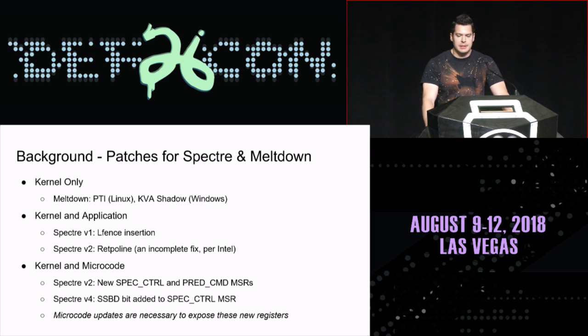Spectre V1 required more patching because you had to go patch everything that had the new speculation gadgets in it — not just kernels, but browsers, sandboxes, daemons, and anything that could potentially be used. We just saw NetSpectre, which was exploiting Spectre in a network-connected daemon. So lots of software to patch, but still just software. Still pretty straightforward — we know how to patch software. It's inconvenient, but we can do it.